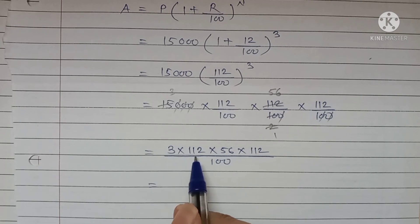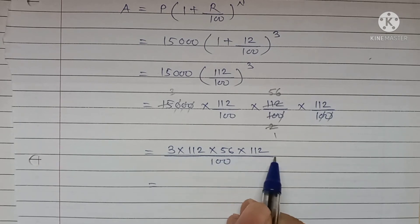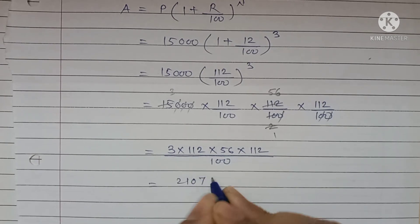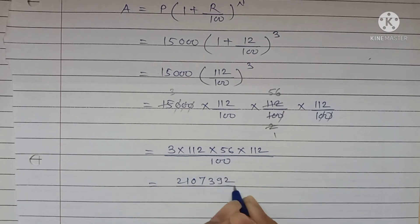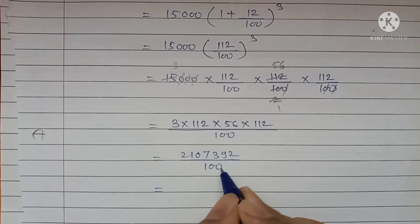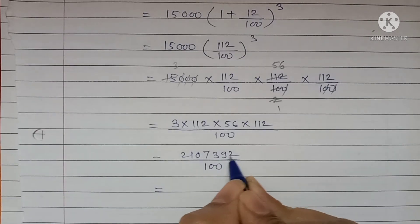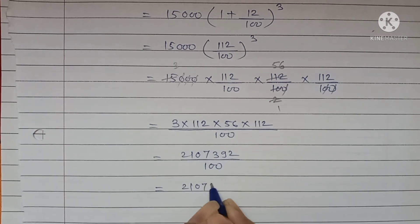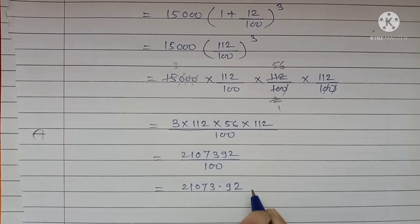3 into 112 multiplied by 56 multiplied by 112. Their multiplication is 21 lakh 7,392 divided by 100, divided by 100. Means here 2 zeros, means you can give here decimal point. Means 21,073.92.